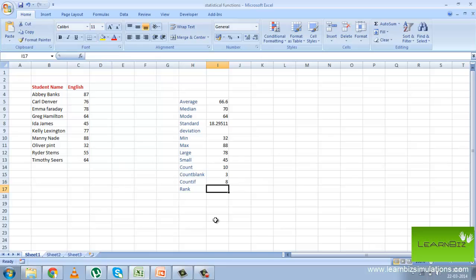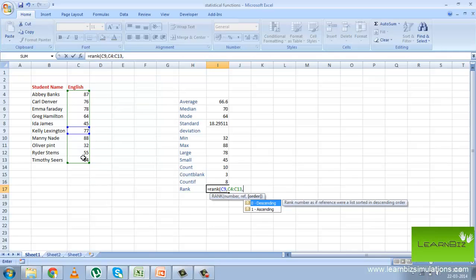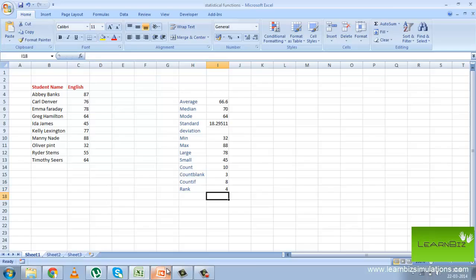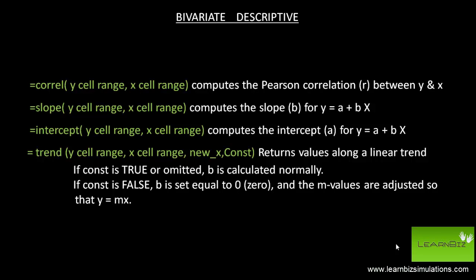The rank finds the rank of Kelly Lexington in English and we use zero as we want it in the descending order. Next, let us look at some bivariate descriptive functions.